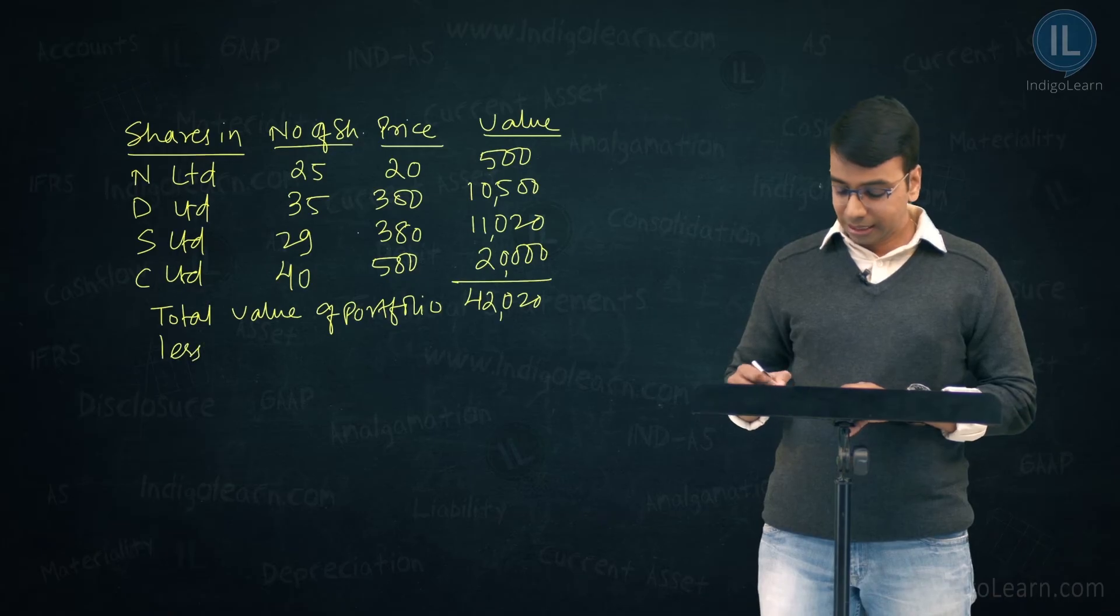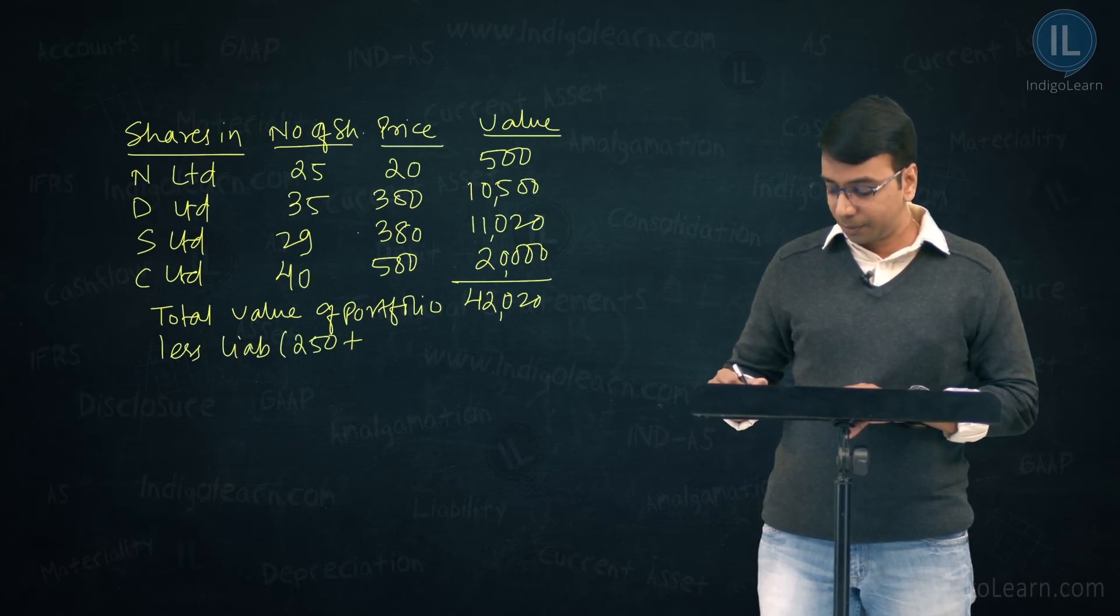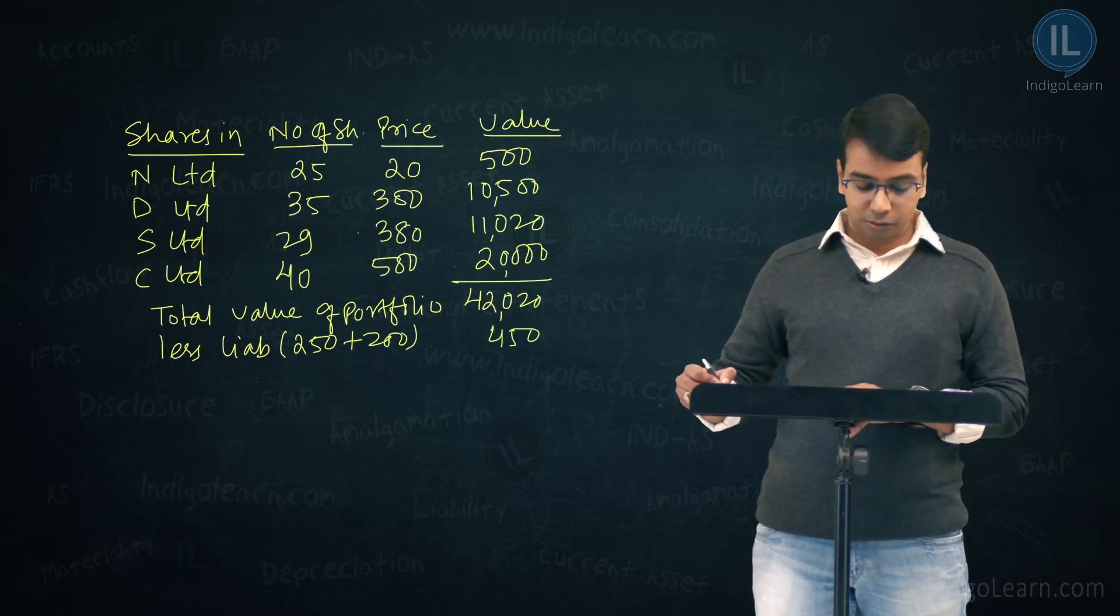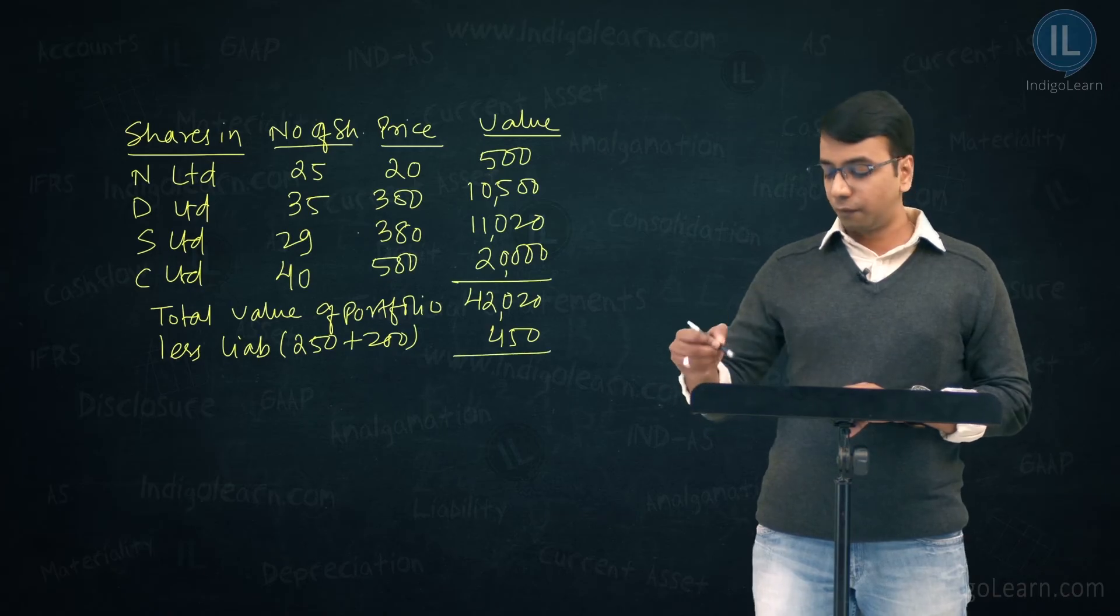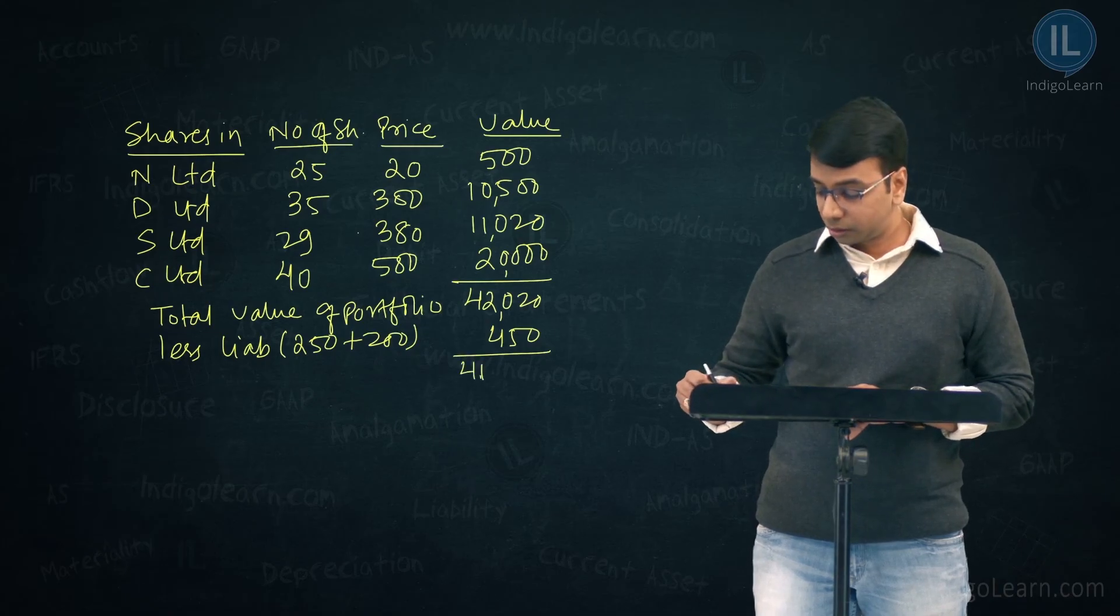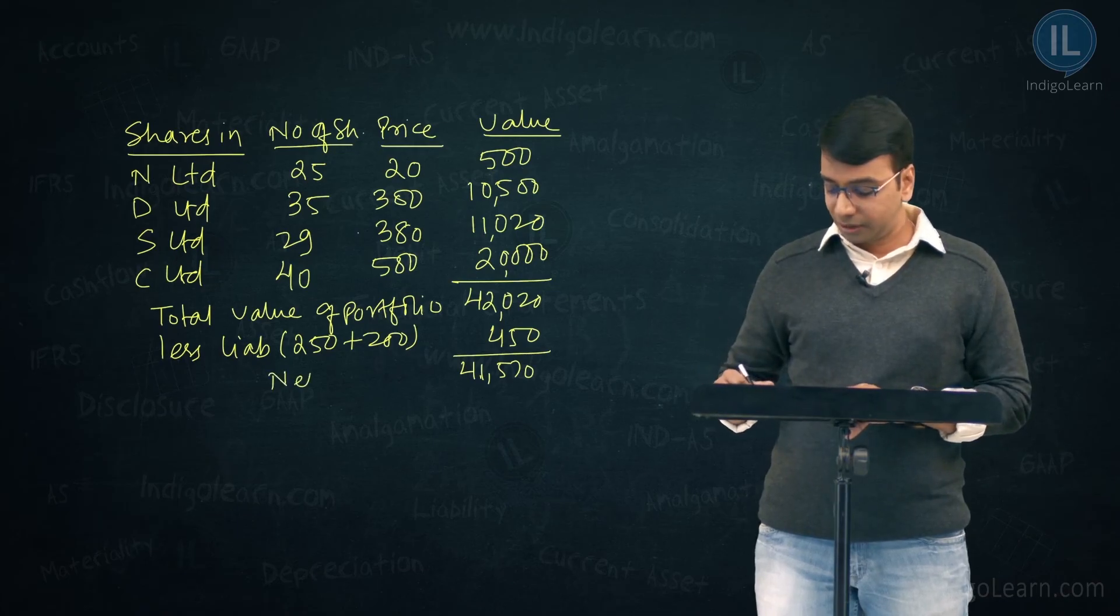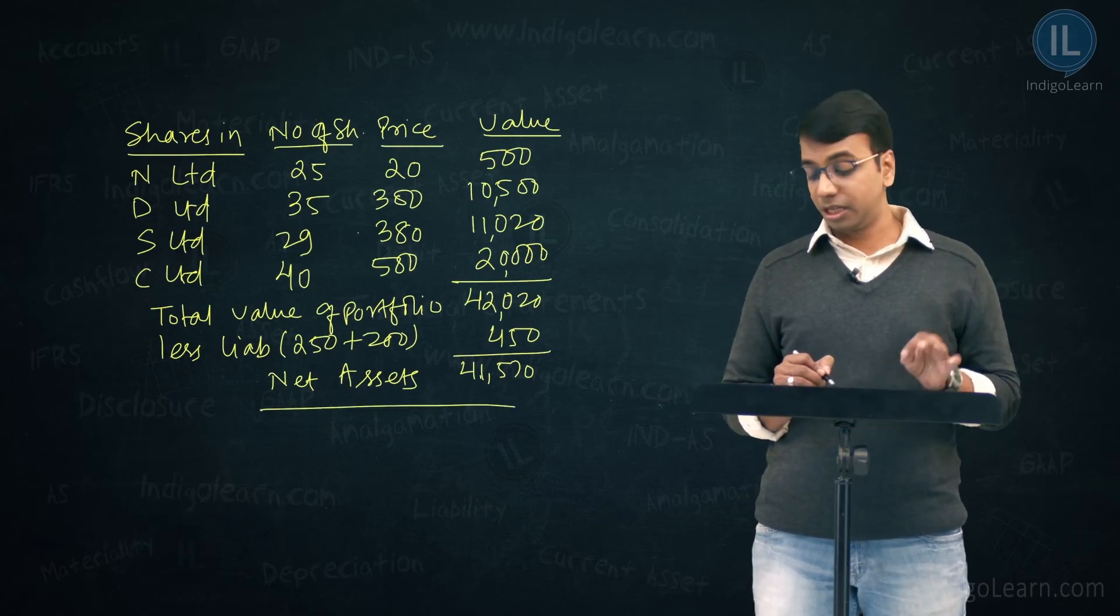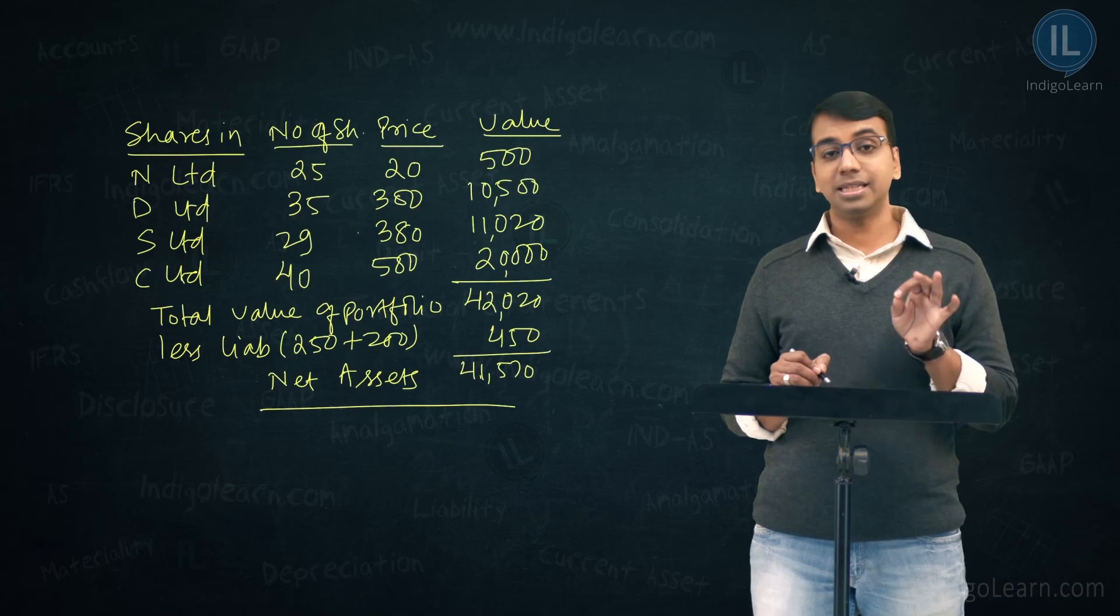Less liabilities of ₹250 plus ₹200, which is nothing but ₹450. This comes to, if you reduce ₹450 from ₹42,020, you get ₹41,570. ₹41,570 is the net assets of the mutual fund.